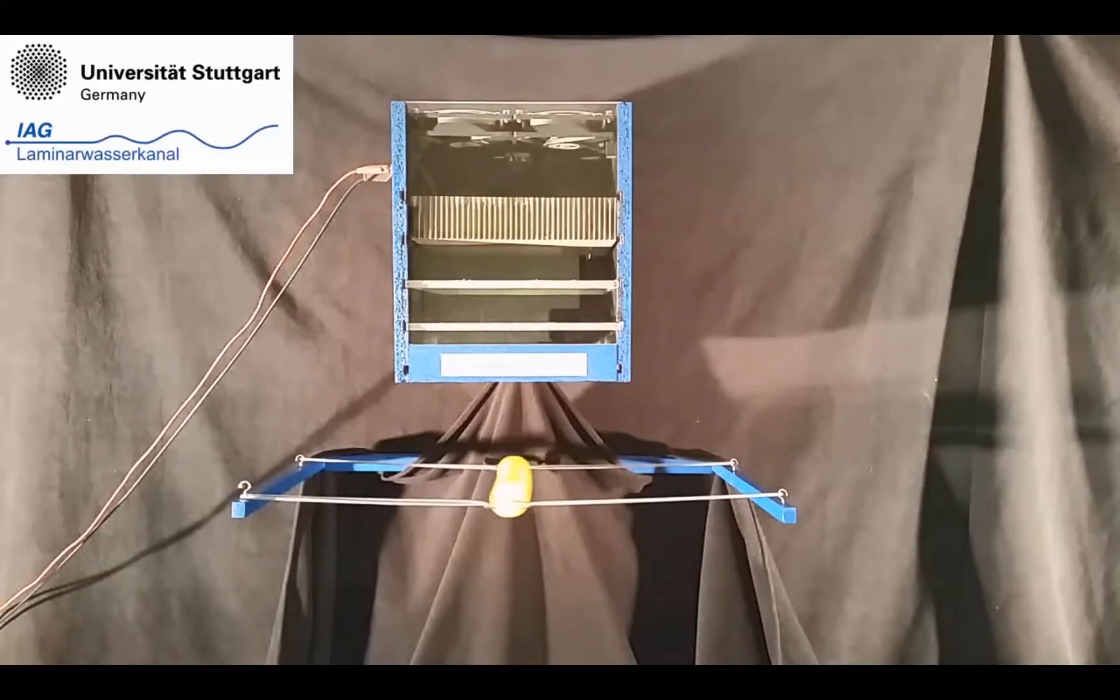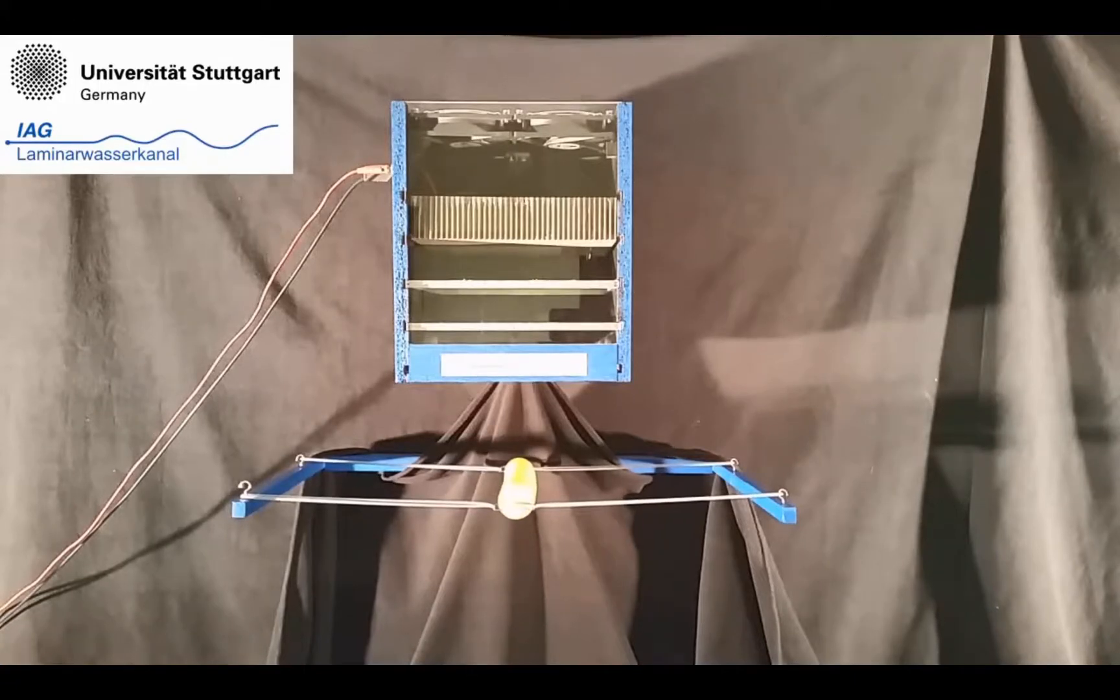Here you can see the oscillation again if the velocity is chosen correctly. Now the velocity of the wind tunnel is doubled. As a result there is no resonance anymore and the balloon does not oscillate at a certain frequency anymore.